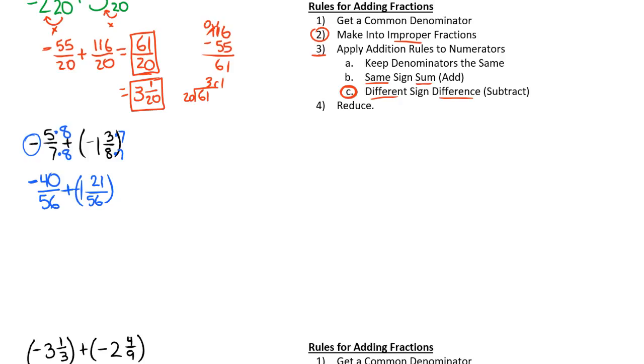Our next step is to get this negative 1 and 21 over 56 into an improper fraction. We don't have to worry about this first one because it's already in fraction form, so we just leave it. We say 56 times 1 is 56, plus 21 is 87 over 56, and this is negative, so we'll put it on the top.